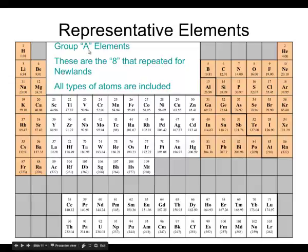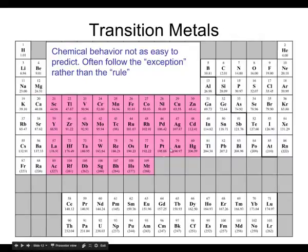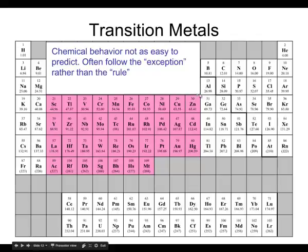Sometimes we refer to these as the Group A elements, and on the periodic table their columns are titled with a number and A. They're representative because they include all different kinds of atoms. The middle of the periodic table is not part of the representative elements — these are what we call the transition metals. I often refer to these as the ill-behaved or naughty elements because they don't tend to follow the rules.